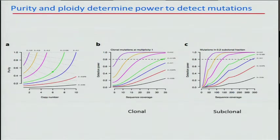Perhaps most interesting is that if you want to detect subclonal events at 20 percent cell fraction, then you need to sequence fairly deep. But on the other hand, these numbers are actually pretty readily attained with a lot of our whole exome experiments that we're doing currently.